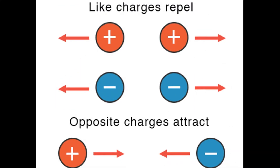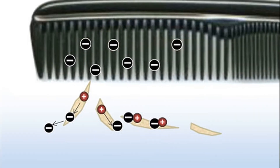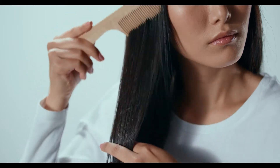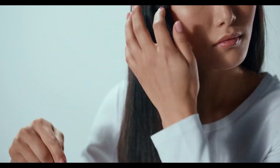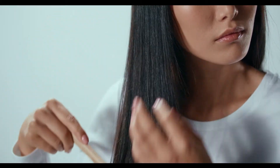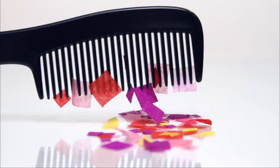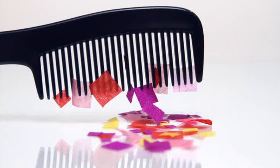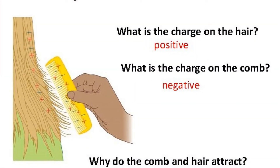Electrostatic force: Bring a plastic comb close to a heap of small pieces of paper — nothing extraordinary happens. Now run the comb repeatedly through your hair and bring the comb close to small pieces of paper. You will see the paper rise and stick to the comb. This force of attraction that develops when certain objects are rubbed against each other is called the electrostatic force.